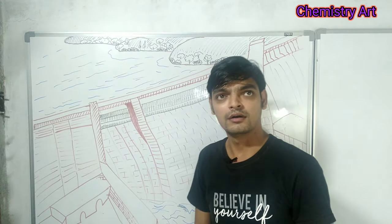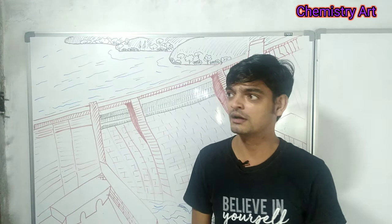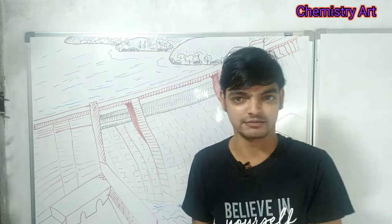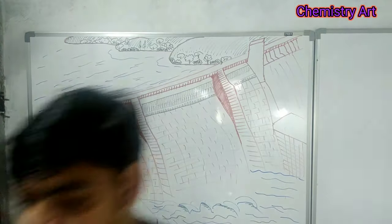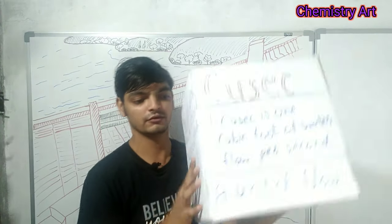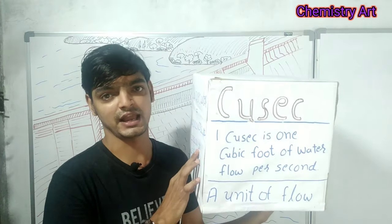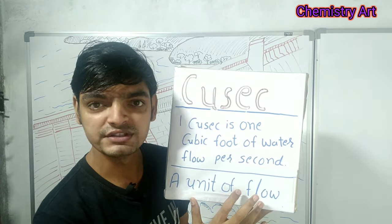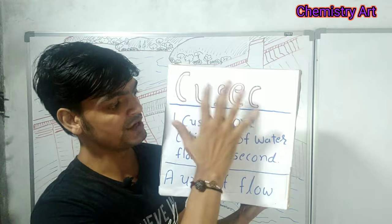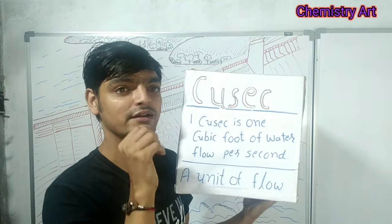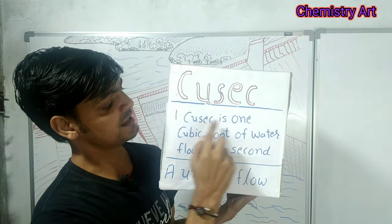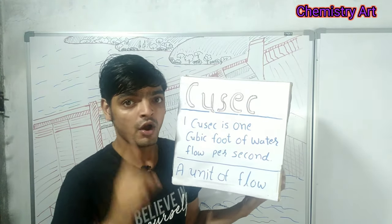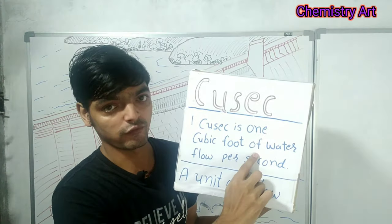You are hearing many times in the news that one lakh QCF water is released from the dam. So what is one lakh QCF? QCF is a unit of measurement of flow — generally for water. It measures how much water is flowing in a second. One QCF means one cubic foot of water flow per second.